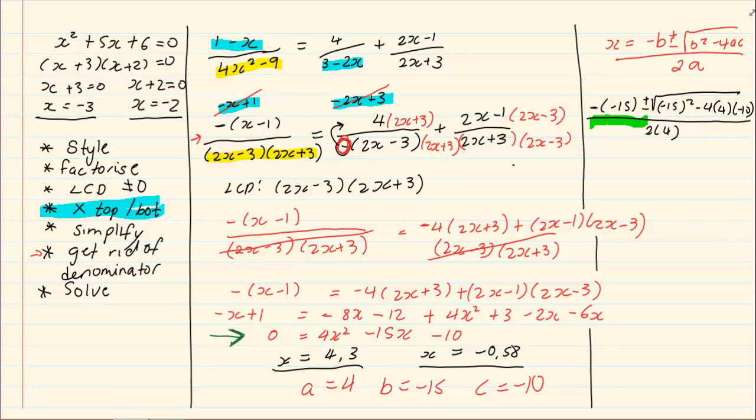Immediately it will give you an answer. You must read the question correctly. If they say they want the answer in surd form, then you write it as x is equal to 15 plus the root of 385 all over 8.